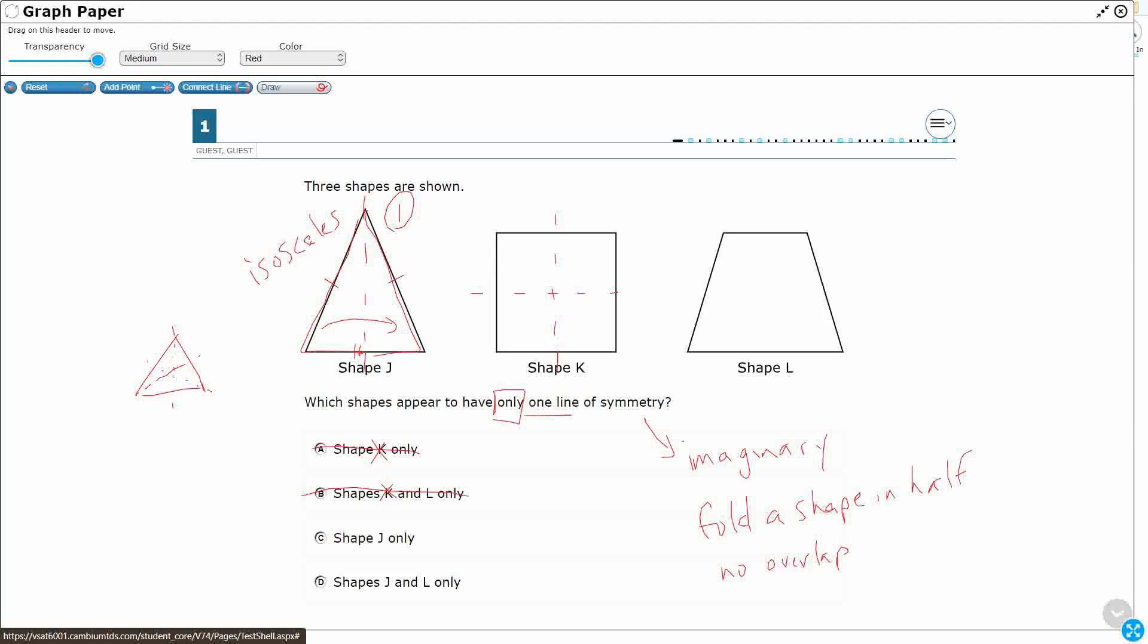But that's also not it. Take a look. Since this is a square, all four sides are the same length. You can't do this with a rectangle, but you can do this with a square. Watch.